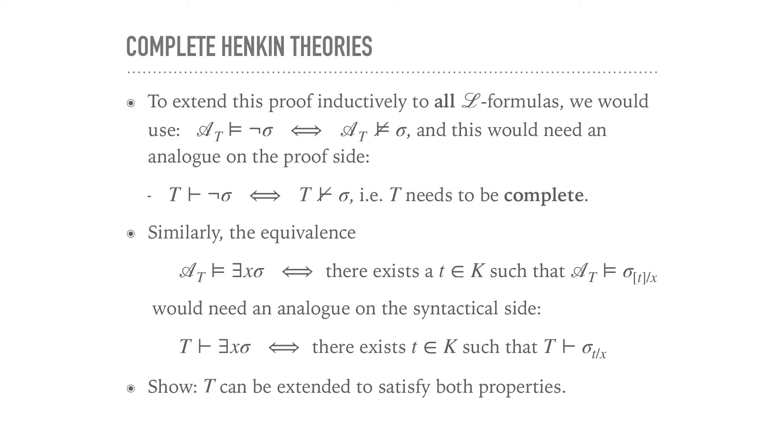Of course, we would like to extend this theorem or this proof now inductively to all L formulas or L sentences. Well, we would use, for example, in the case of negation, we would need to use that AT models not σ if and only if AT does not satisfy σ. But we would need to be able to connect this now to the proof side. So it would need an analog there. And that analog would be that T proves not σ if and only if T does not prove σ. And that's precisely the property of T being complete. So if you recall complete theory, for every σ, it proves either σ or not σ.